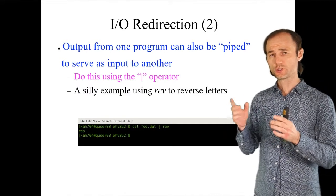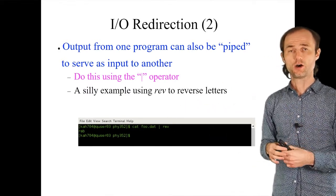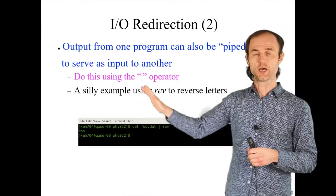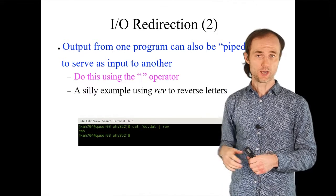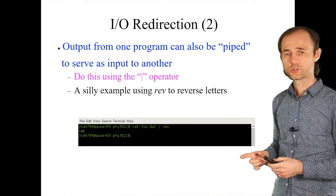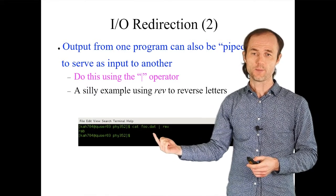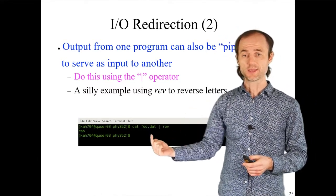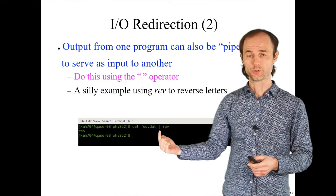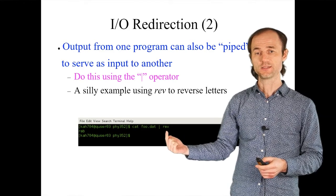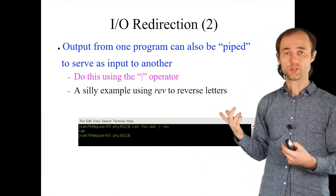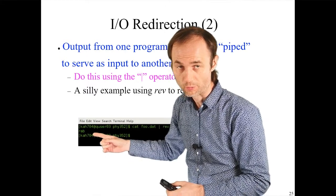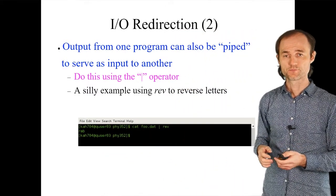You can also create a daisy chain of commands using pipes, where the output of one command becomes the input of the next. For example, you can pipe the contents of foo.dat into the rev command, which flips the order of characters — so bar becomes rab.